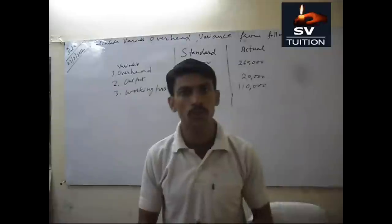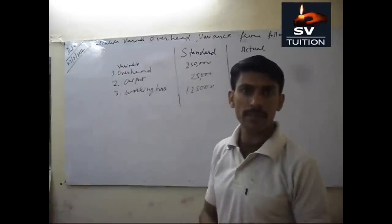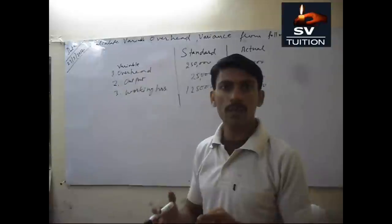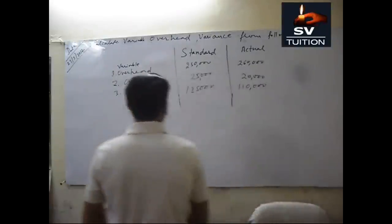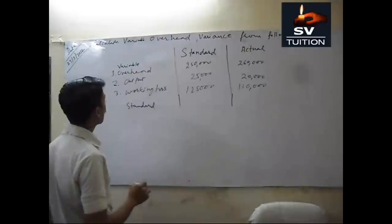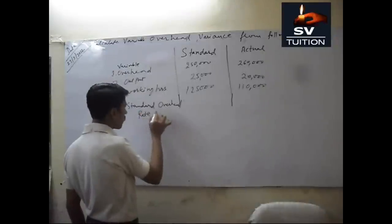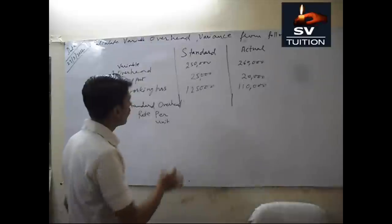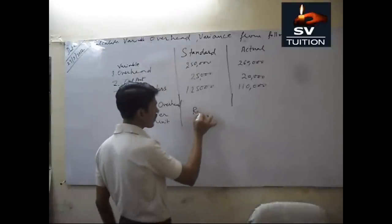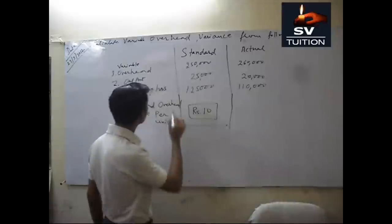Hello friends. In this tutorial, today's topic is variable overhead variance. Variable overhead variance is the difference between the standard variable overhead cost and actual variable overhead cost. First of all, we will calculate the standard overhead rate per unit. If we divide 250,000 by 25,000, it will be rupees 10.